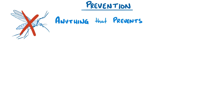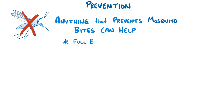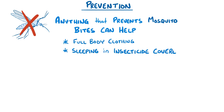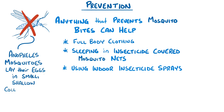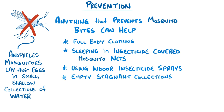Since malaria is spread by mosquitoes, anything that prevents mosquito bites can help, like full-body clothing, mosquito repellent, sleeping in insecticide-covered mosquito nets, and using indoor insecticide sprays. In addition, Anopheles mosquitoes like to lay their eggs in small, shallow collections of freshwater, like containers sitting outdoors during the rainy season in tropical countries. To control the mosquito population, it's important to empty out these containers and any other stagnant collections of water.